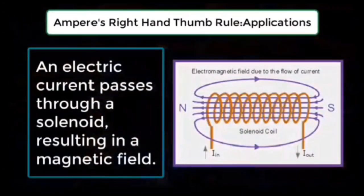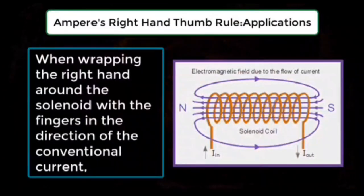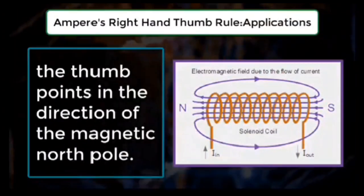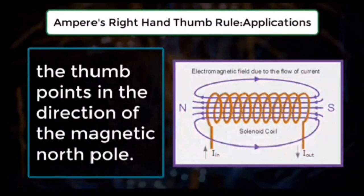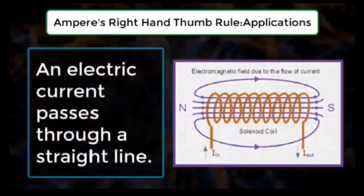resulting in a magnetic field. When wrapping the right hand around the solenoid with the fingers in the direction of the conventional current, the thumb points in the direction of the magnetic north pole.